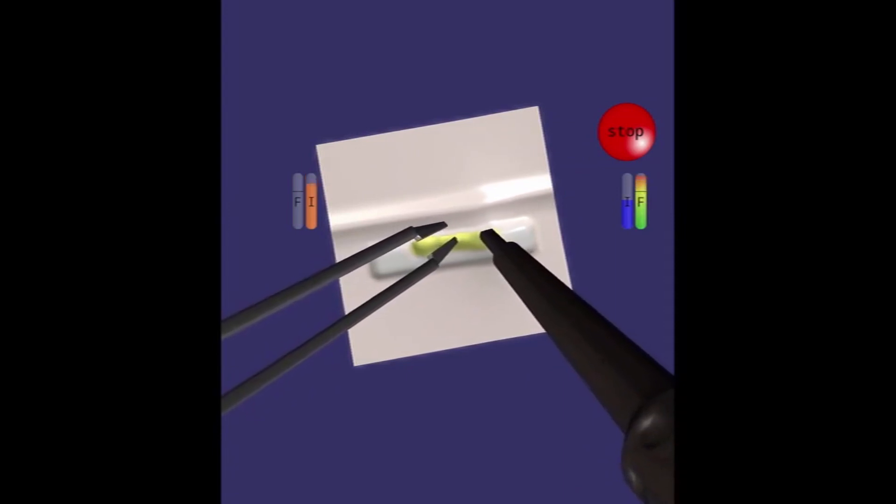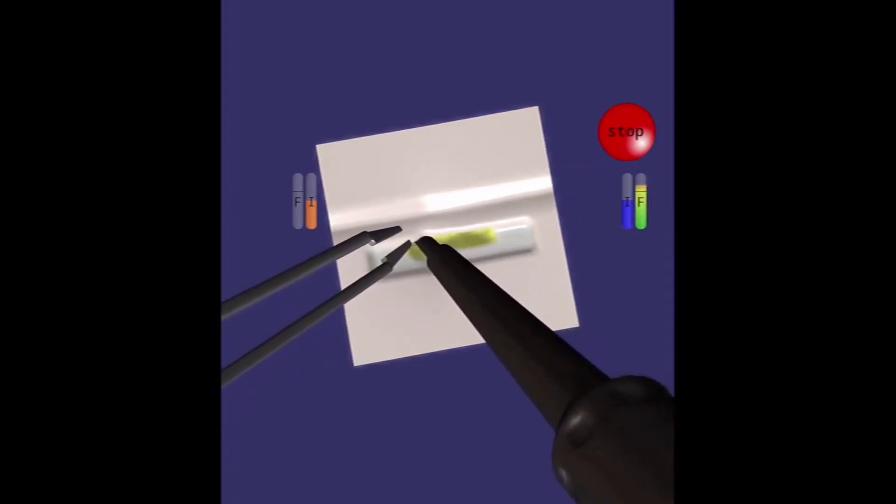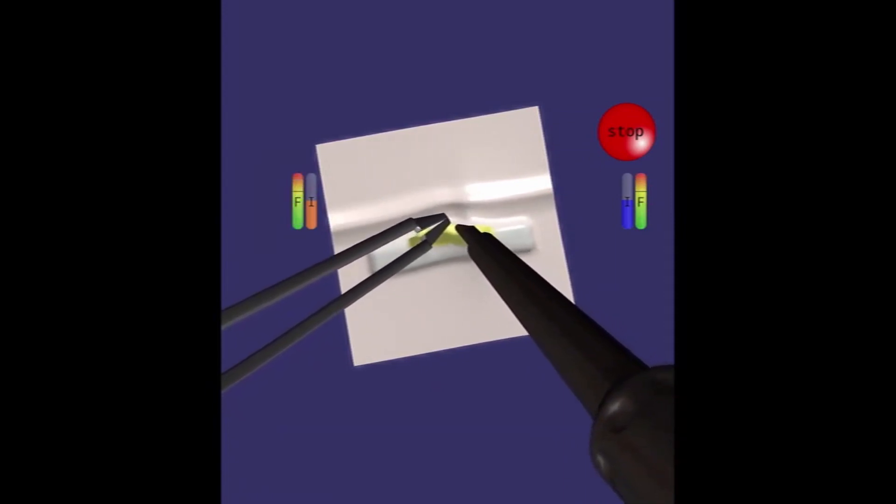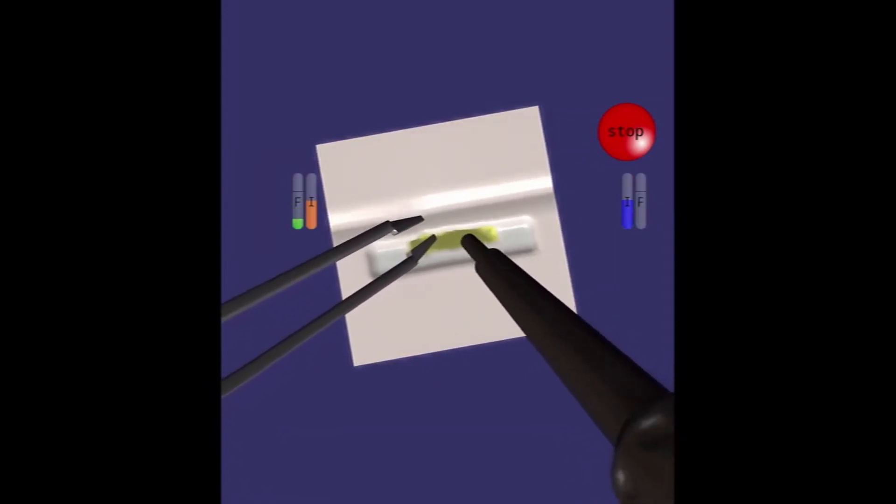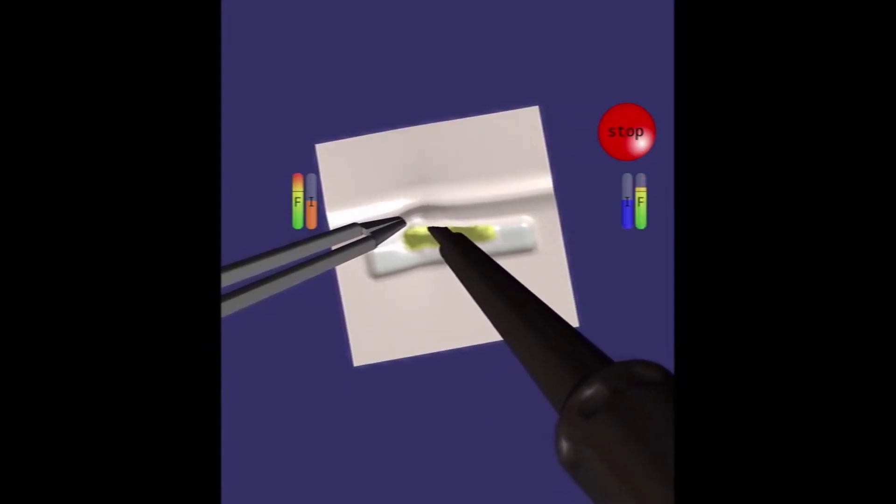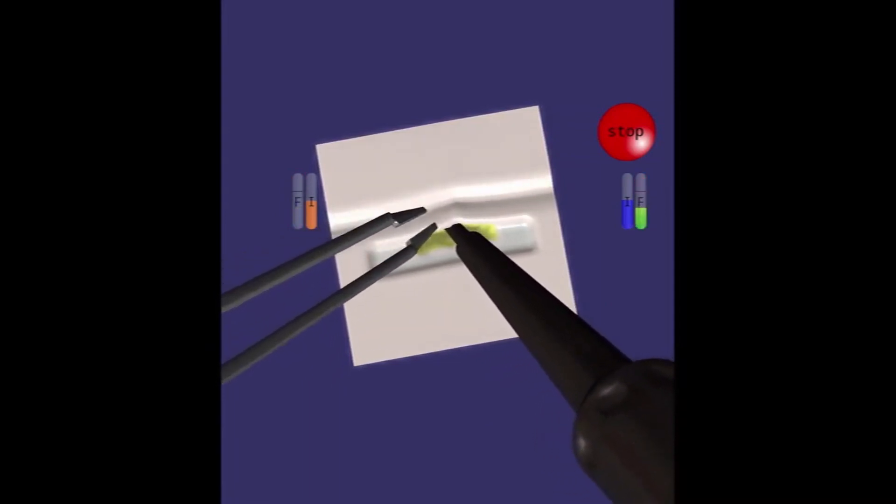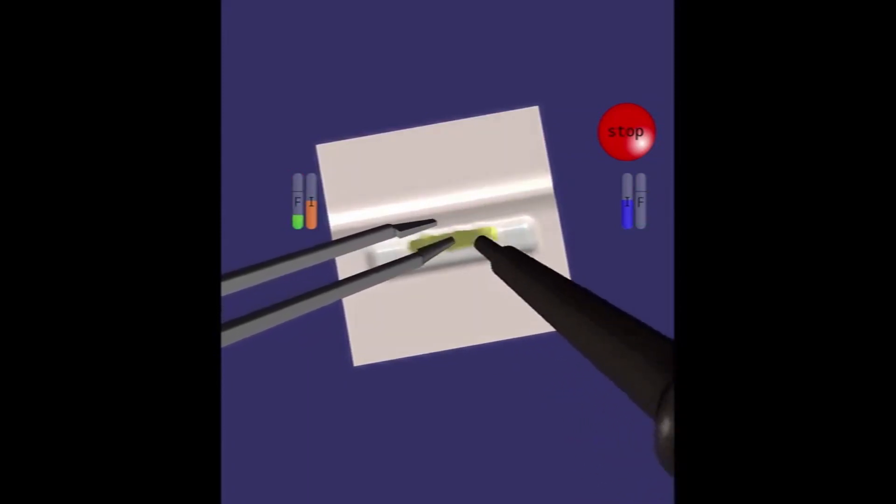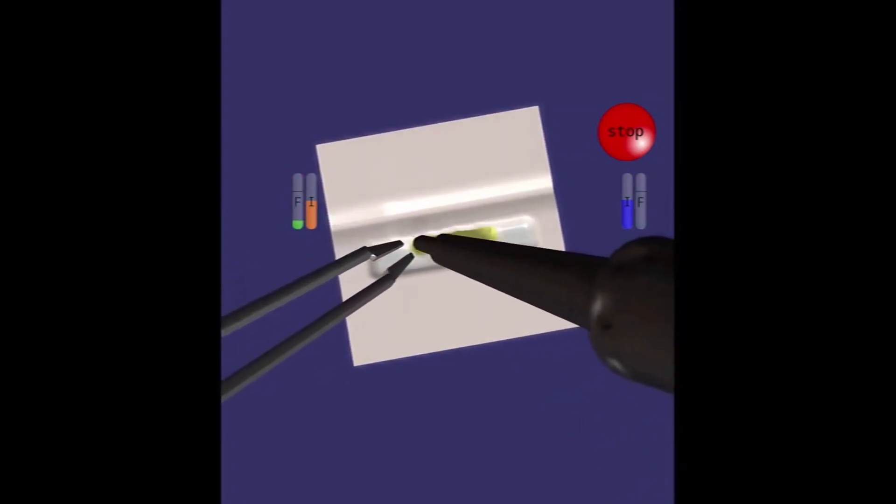Instruments used are a simulated bipolar forceps in the left hand and a simulated cavitron ultrasonic aspirator in the right hand. Both instruments are activated with a corresponding foot pedal. The two bars on either side of the field of view correspond to the intensity of the instrument's activation and the force applied by that instrument.